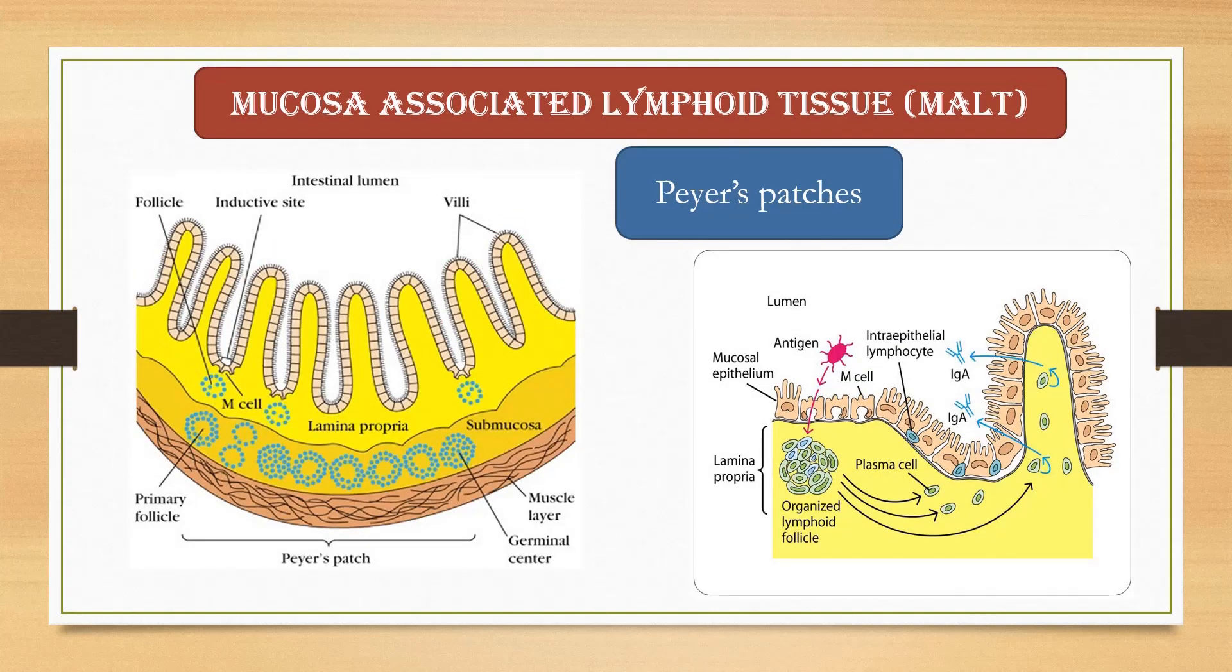Peyer's patches are the lymphoid tissue present throughout the ileum region of the small intestine. Outer mucosal epithelial layer contains T lymphocytes. Lamina propria, which is present under the epithelial layer, contains B cells, T lymphocytes, and macrophages.